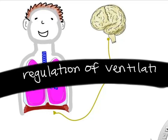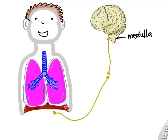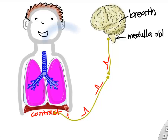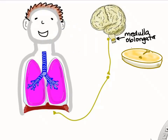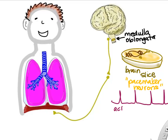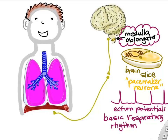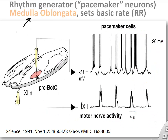The regulation of ventilation is centered in our medulla oblongata. The medulla sends out impulses through a peripheral nerve called the phrenic nerve, and those action potentials reach the skeletal muscle of our respiratory diaphragm, causing us to breathe. Scientists have cut out brain slices from the medulla oblongata and found pacemaker neurons that continually send impulses even when removed from the brain — shooting out bursts of action potentials at about 10 to 16 per minute, matching the basic respiratory rhythm.